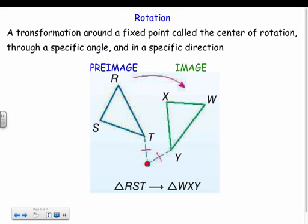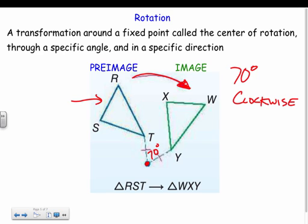It'll always give you an angle measure and a direction. In this case, it looked like I shifted somewhere about like 70 degrees. Since this is my pre-image right here and it went this way, it looks like it is going clockwise. So for example, it probably said it's rotating 70 degrees clockwise - that's an example of it going through a specific angle in a specific direction.